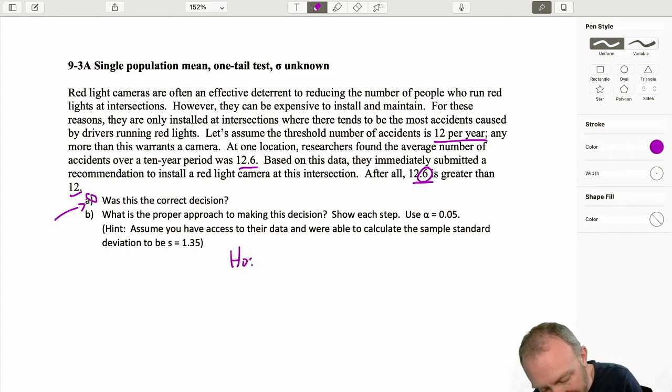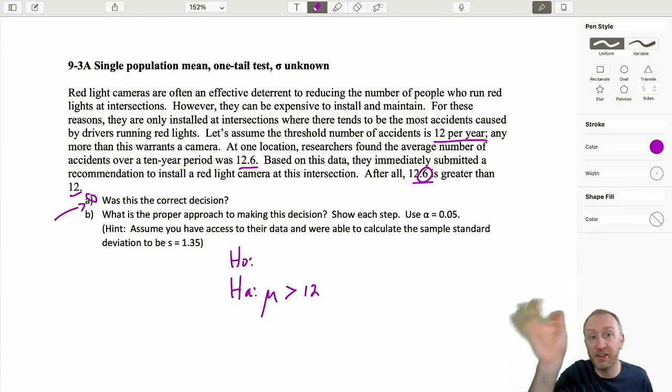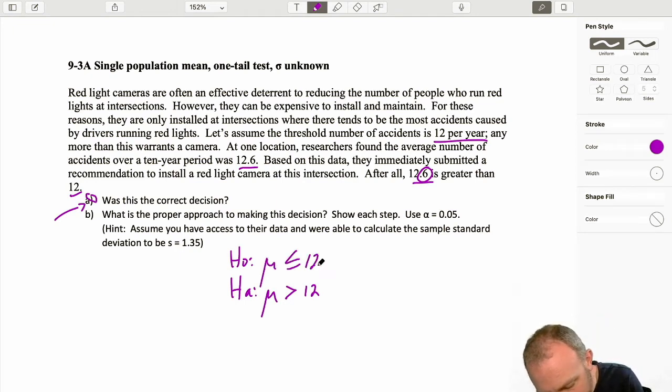So I would set this up as an upper tail test because we only want to put cameras where the average is greater than 12. So if our evidence supports the alternative hypothesis, well there's a good spot to put a camera. If our evidence supports the null hypothesis, well then it's not more than our threshold, in other words we should not put a camera there. And then we can do this at whatever level of significance. Here we have 0.05. Notice the similarities here between the earlier tests that we did using the Z distribution. So far, nothing's been different.